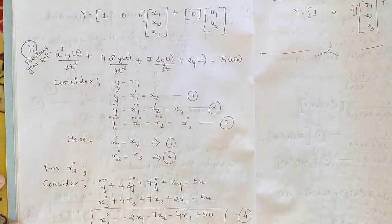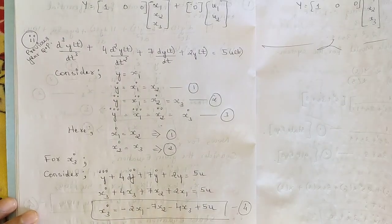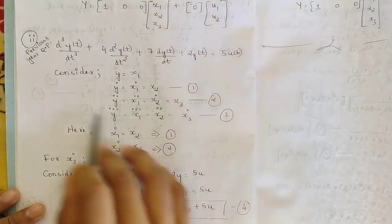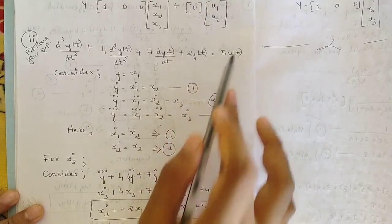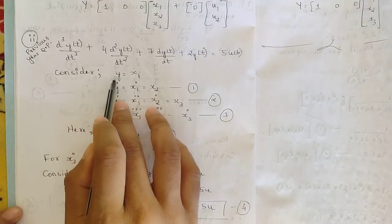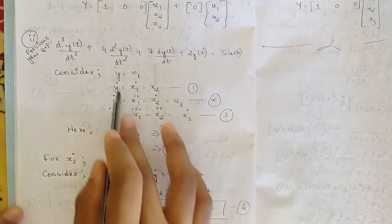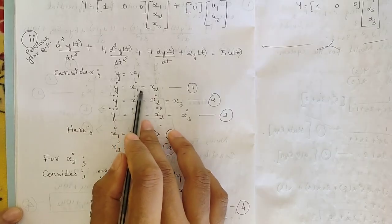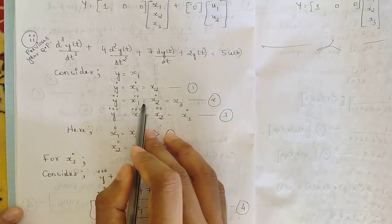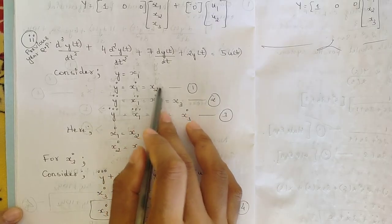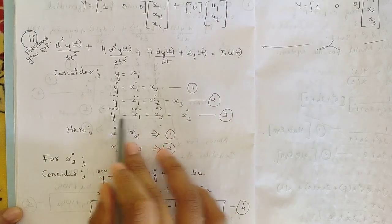Now for the second problem, from the 2022 scheme previous year question paper, with a similar approach but only one input u(t). The equation is: d³y/dt³ + 4 d²y/dt² + 7 dy/dt + 2y = 5u(t). Again, the first step is y = x₁. Then y_dot = x₁_dot = x₂ (equation 1), y_double_dot = x₁_double_dot = x₂_dot = x₃ (equation 2).